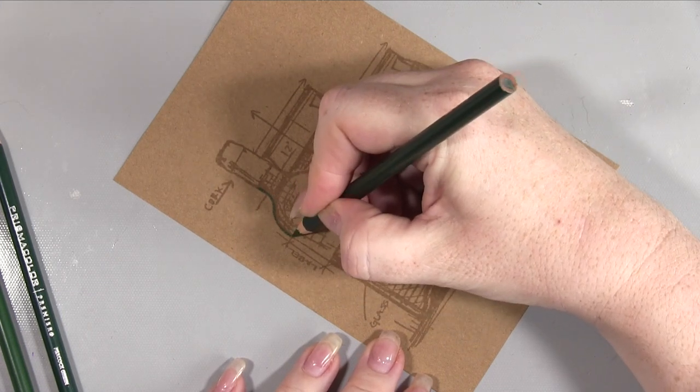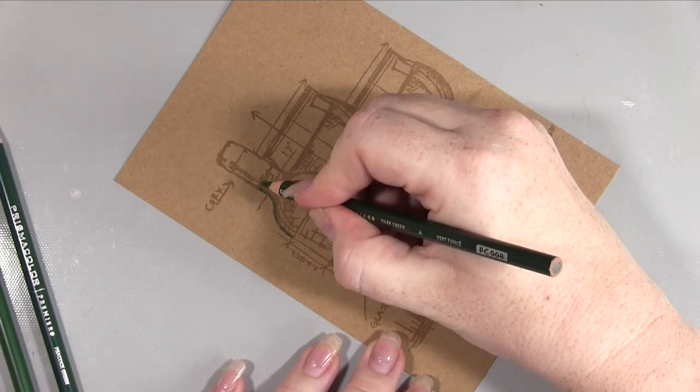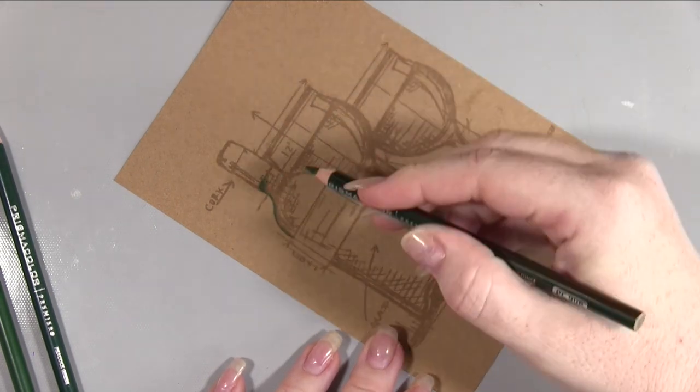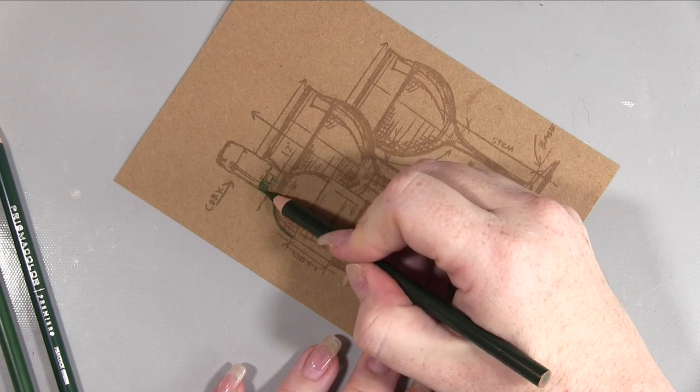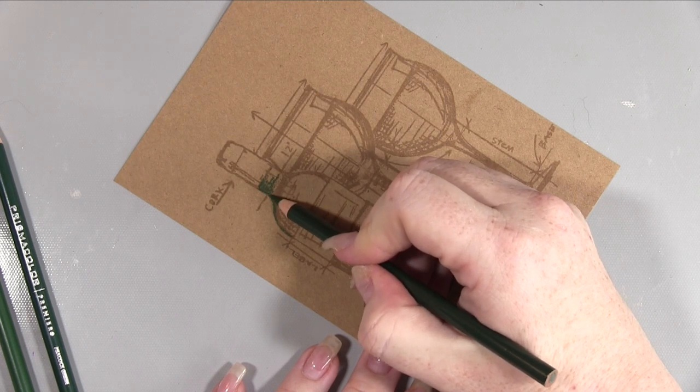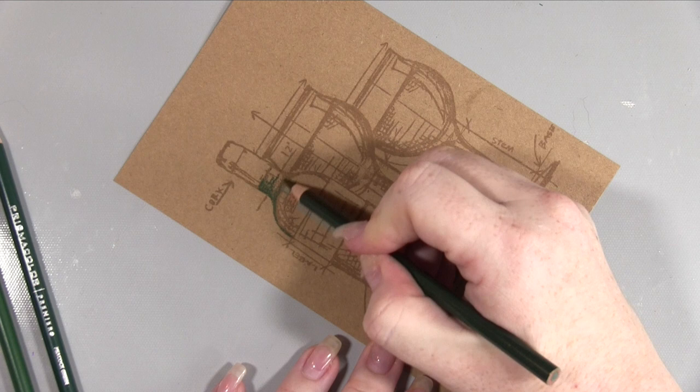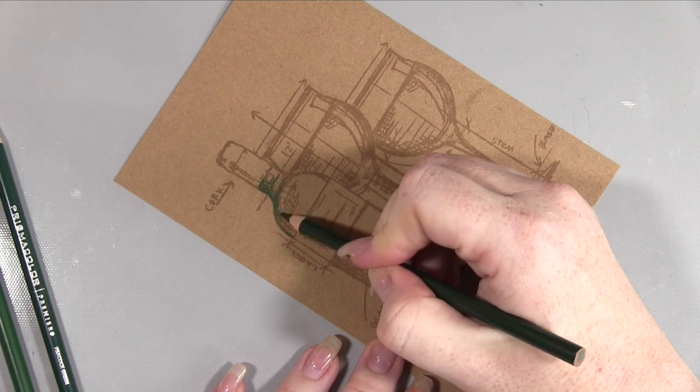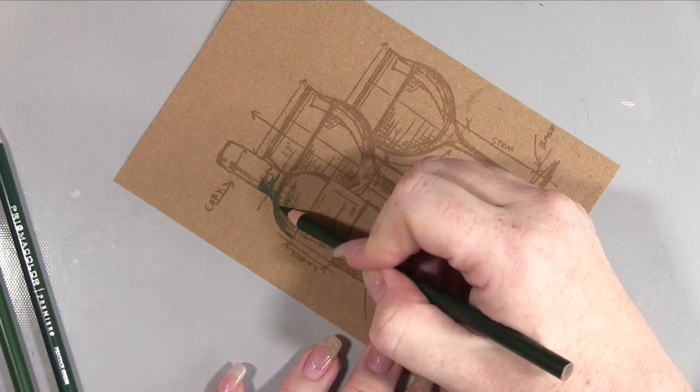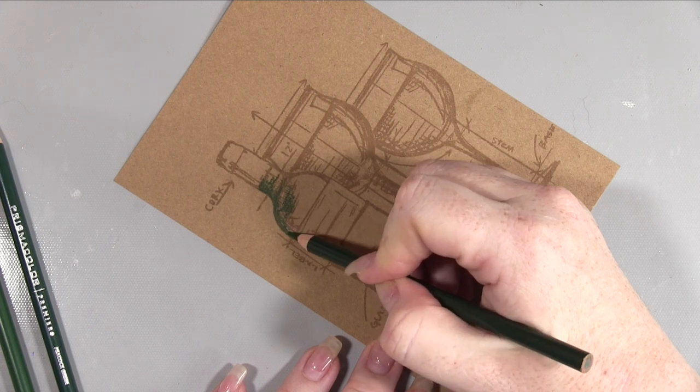Now we're going to get on with the actual coloring and for this I'm going to be using my Prismacolor pencils. I just love coloring with the Prismacolors on the craft card in particular. I think it works really nicely. So what I'm going to do is speed this up a little for you and put some music on so I hope you enjoy.